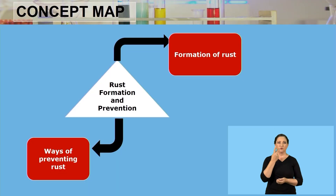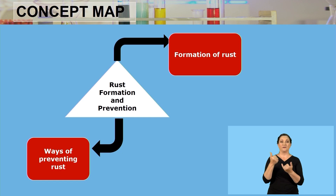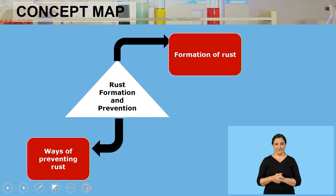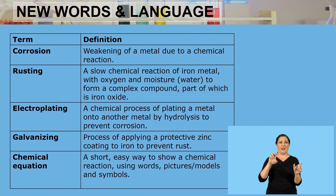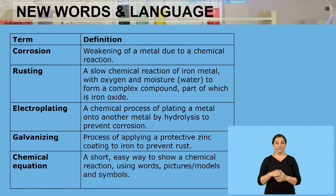We're just going to do a quick recap and see what we went through in the entire lesson. We first looked at the formation of rust and also looked at the ways of preventing rust. Throughout this lesson we used words such as corrosion, rusting, electroplating, galvanizing, and chemical equations to better explain how rust is formed and how we can prevent it.